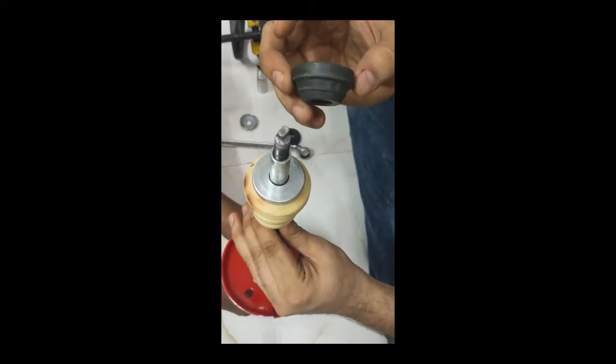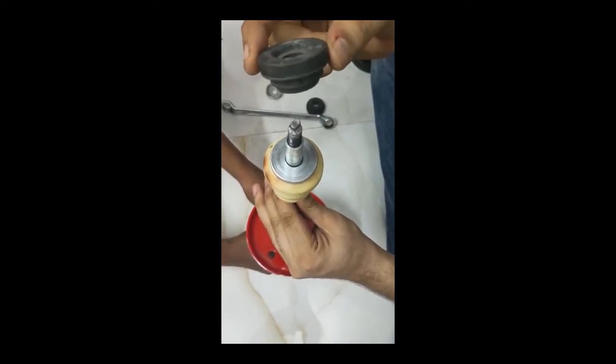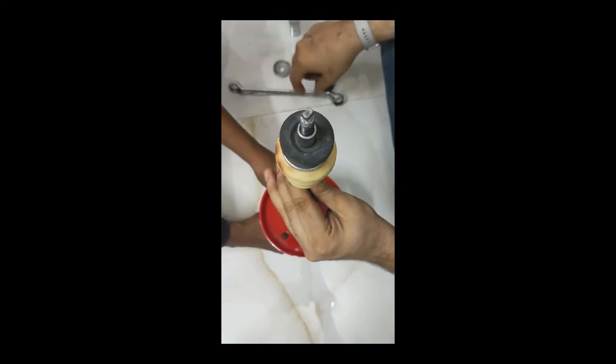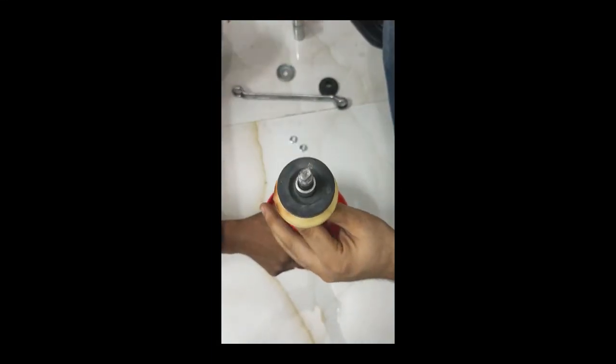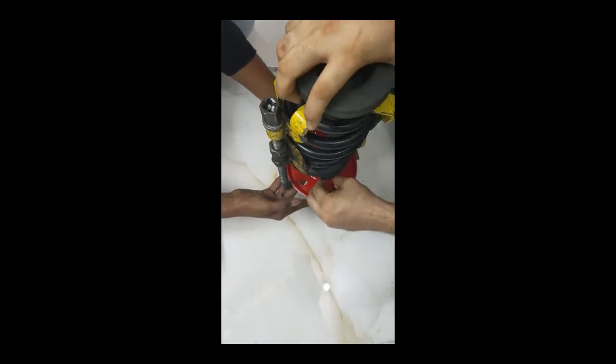After that, take this bushing. The cone part should be at the downside of the shock absorber. While putting the downward bushing like this, take the spring and put it onto the shock absorber.